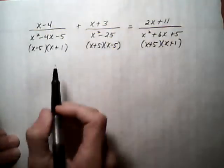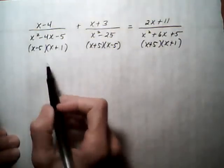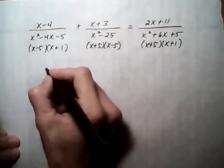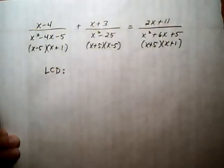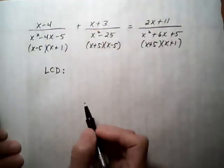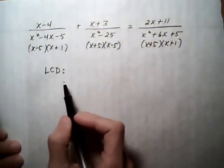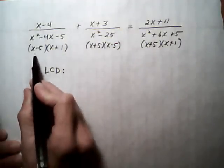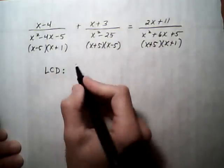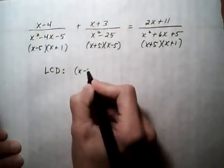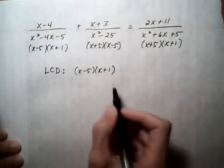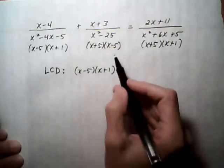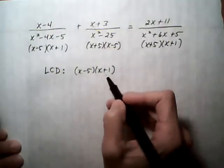So once you have the denominators factored out, you're able to build the LCD. And remember, the LCD needs to contain each denominator completely without having any extra pieces or extra factors that you don't need. So what I usually do is I take the first denominator completely, x minus 5, x plus 1.